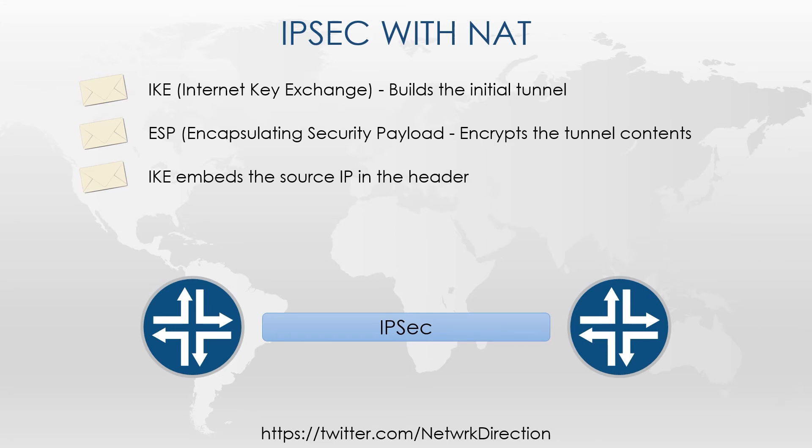NAT tampers with the packet by changing the source IP in IKE's IP header. NAT does not change anything in the payload, of course, so this means that the source IP in the initial IKE packets won't match the source IP in the ESP packets. IPsec sees this as a security threat and it will drop the traffic.